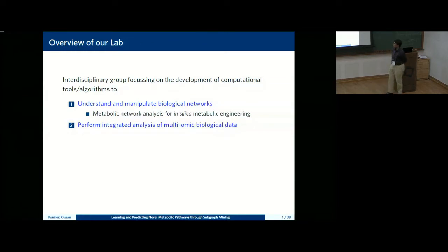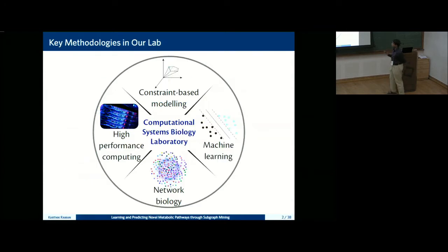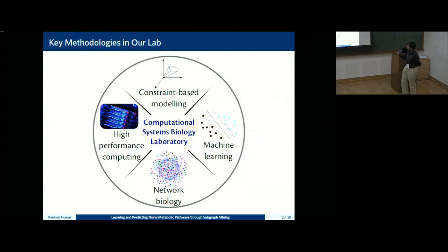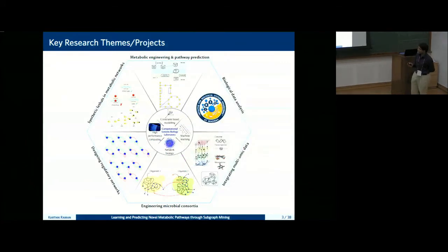We actively participate in the initiative for biological systems engineering, and the Robert Bors Center for Data Science and AI at IIT Madras. The key methodologies we use include network biology, constraint-based modeling, high-performance computing, and machine learning. Today's talk combines those last two areas. We work on predicting synthetic lethals in metabolic networks — combinations of genes lethal to a network, similar to minimal cut sets — as well as metabolic engineering and biological data analysis.